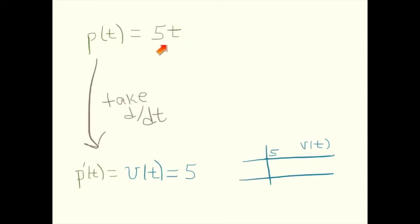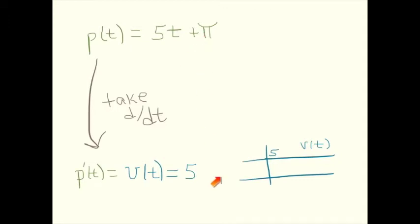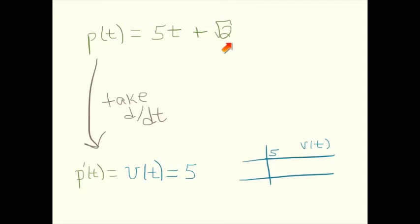One option is 5t. Can you think of another one? What about 5t plus 1? The derivative of the first piece is 5, and the derivative of 1 is 0, so the final answer is still 5. What about 5t plus π? If there's no t's in this expression, it's just a constant — 3.14... The derivative of a constant is 0, so that works. What about 5t plus 365? That works too. Or maybe 5t plus the square root of 2 — that's a constant, its derivative is 0 as well. As you can see, there's an infinite number of possibilities.